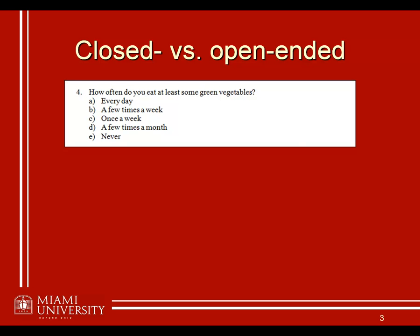The first distinction typically made in creating survey questions is between a closed-ended question versus an open-ended question. Here's one question from the survey presented during the first week of this course: 'How often do you eat at least some green vegetables?' with options like every day, a few times a week, and so forth. A closed-ended question is like a multiple-choice question — you're presented with a prompt and given a limited set of response options, in this case five specific response options.